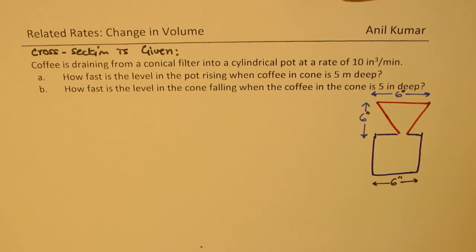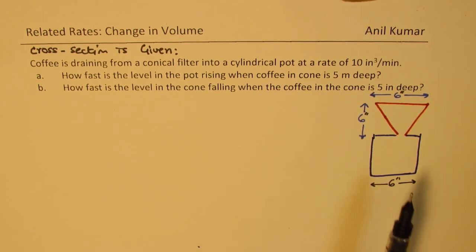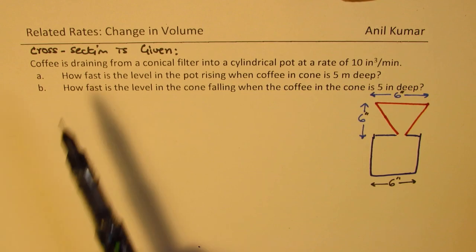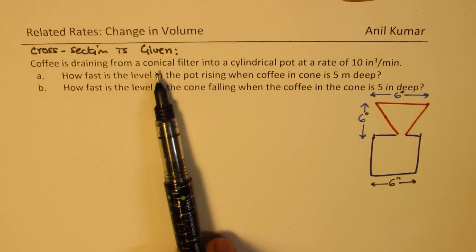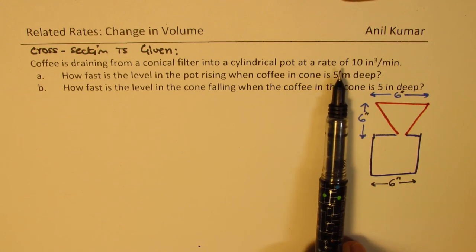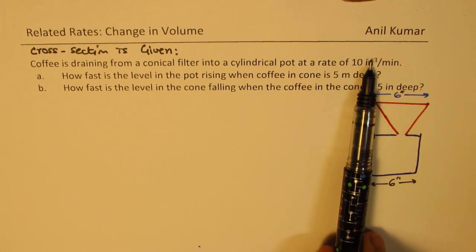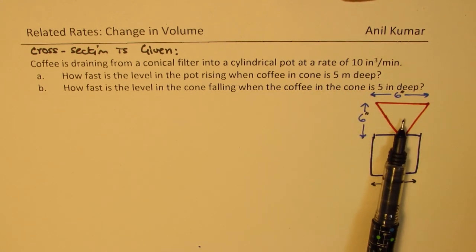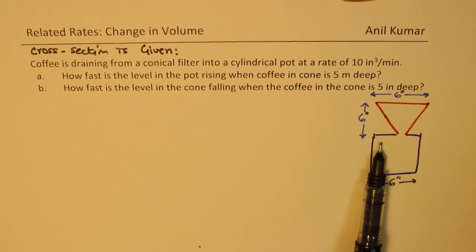The question here is, we will refer to the diagram given to us here. Coffee is draining from a conical filter into a cylindrical pot at a rate of 10 inches cubed per minute. So that's the conical filter and this is your cylindrical pot.